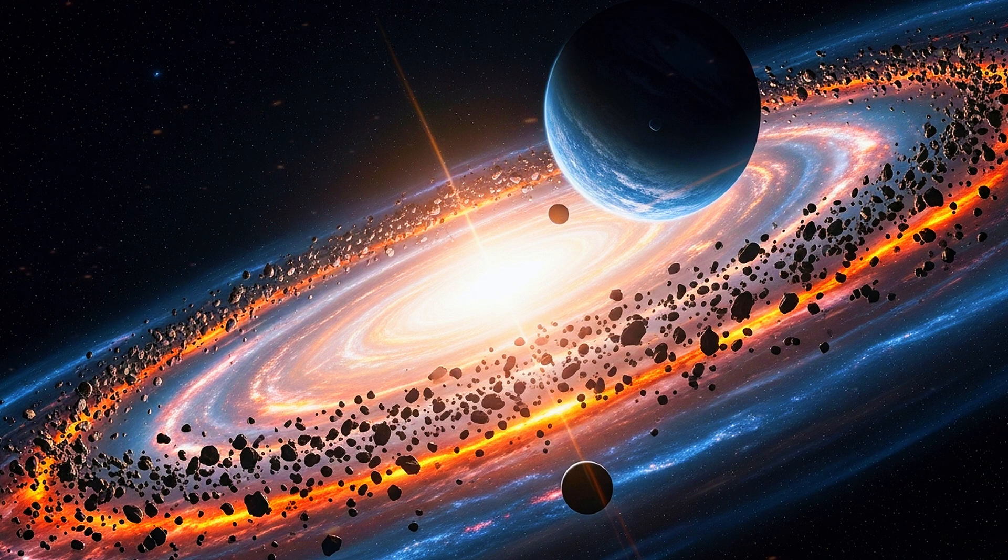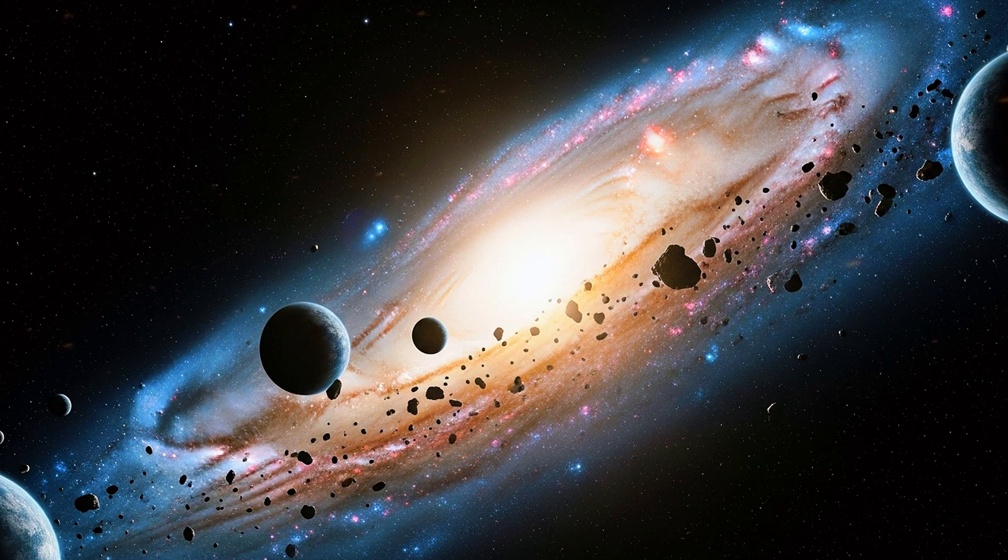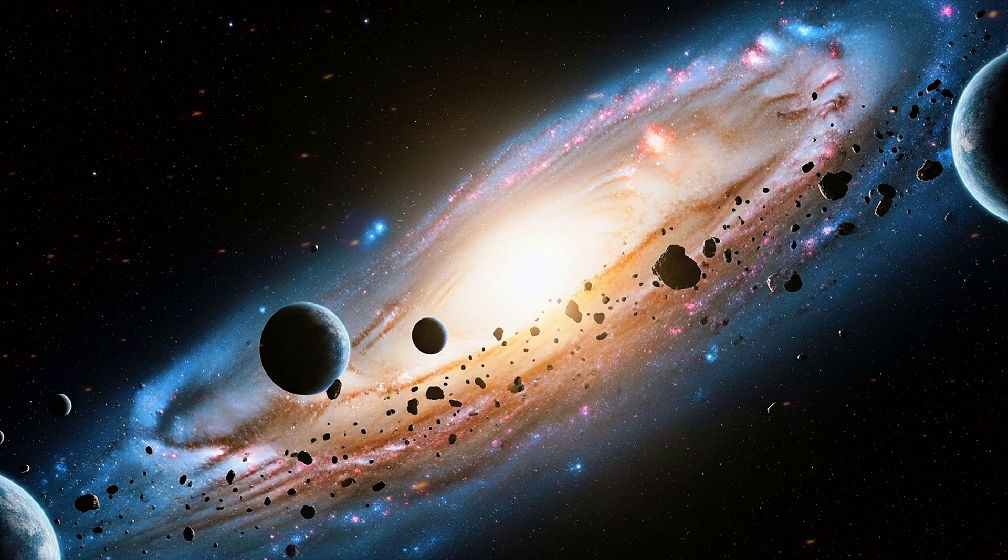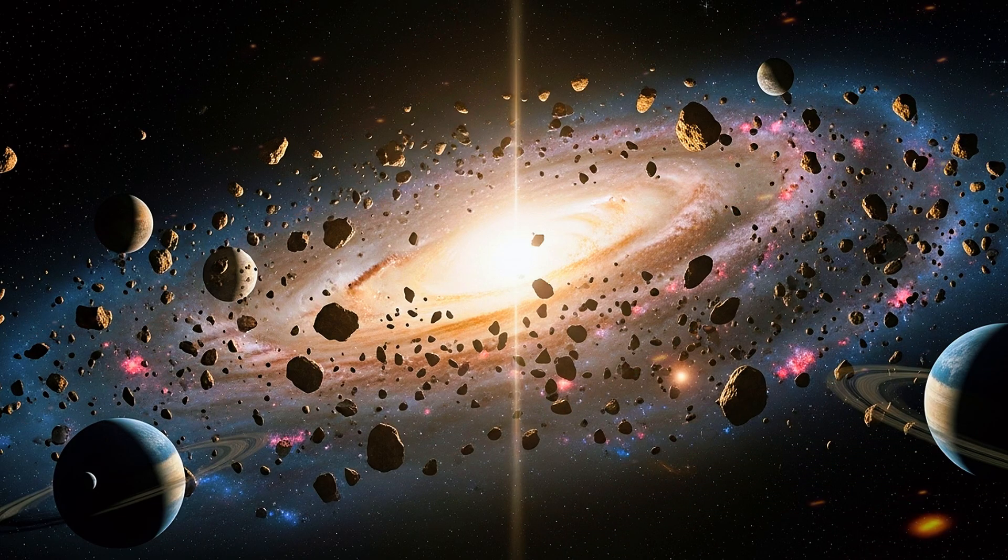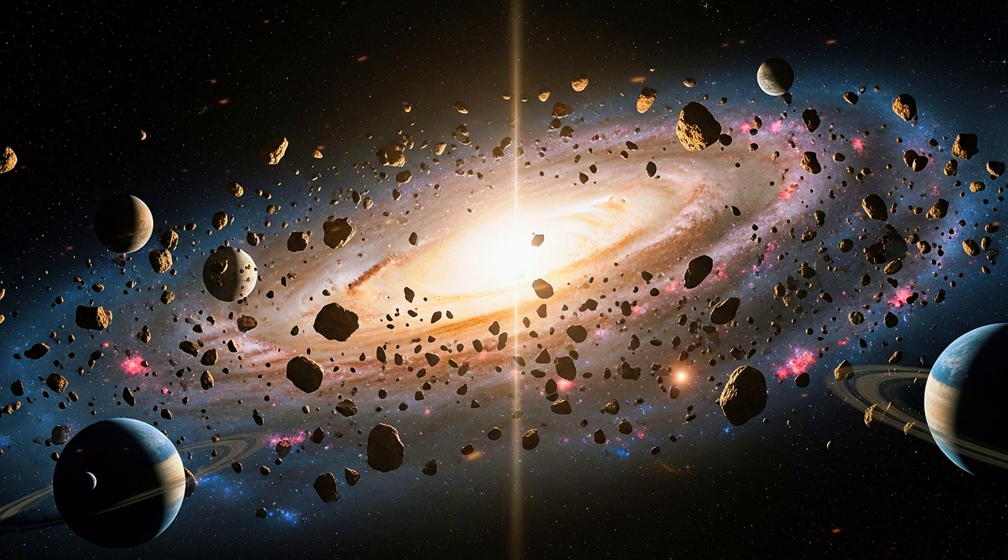Alongside 3I Atlas, we have R2 Swan, A6 Lemon, G3 Atlas—names that sound connected but aren't. The Atlas tag refers to the survey that discovered them, the Asteroid Terrestrial Impact Last Alert System. But to the public, it looks like an entourage of alien icebergs sweeping in together. Clickbait thrives on that image. The reality is still extraordinary: a burst of cometary activity unlike anything in decades.